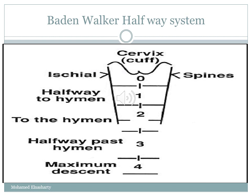Another classification is the Baden-Walker halfway system: stage 0 is normal position for each component; stage 1 is descent halfway to the hymen; stage 2 is descent to the hymen; stage 3 is descent halfway past the hymen; and stage 4 is maximum possible descent for each side.